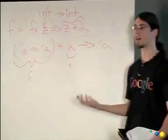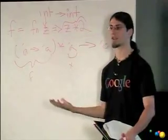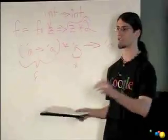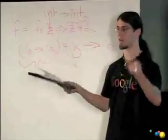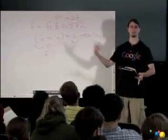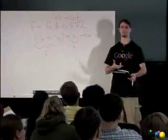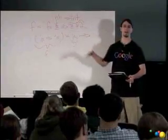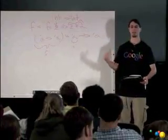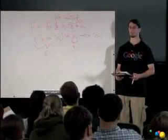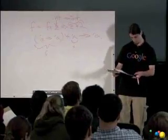We could also use this on any other type, like strings. For example, we could take some function which takes a string and concatenates it with itself. That would take a function type string to string, which would also fit into the alpha to alpha pattern. It's just that it's a different alpha than when we would use it with an integer.